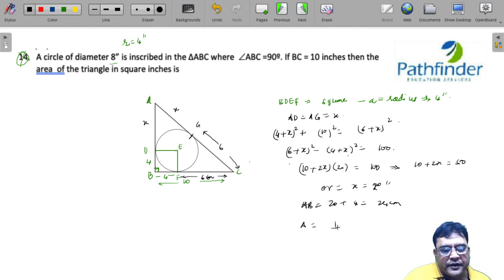And now, we can have the area 1 by 2 into AB that is 24, which is the perpendicular into BC, which is 10. That is 120 centimeter square, which is your answer.